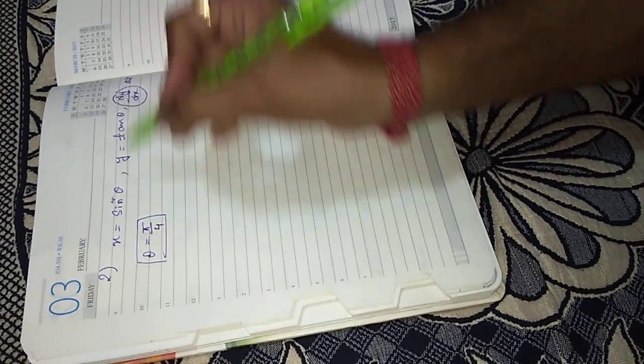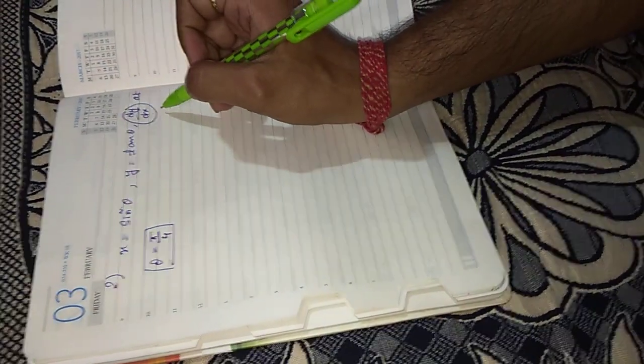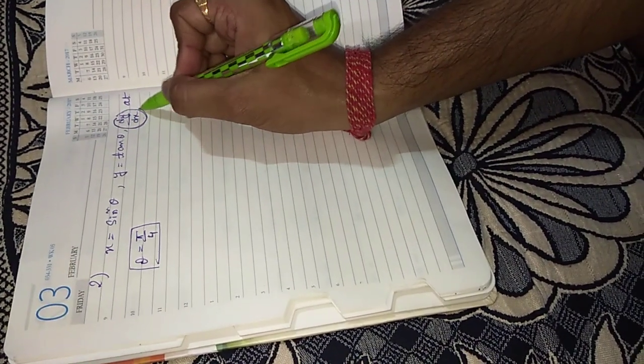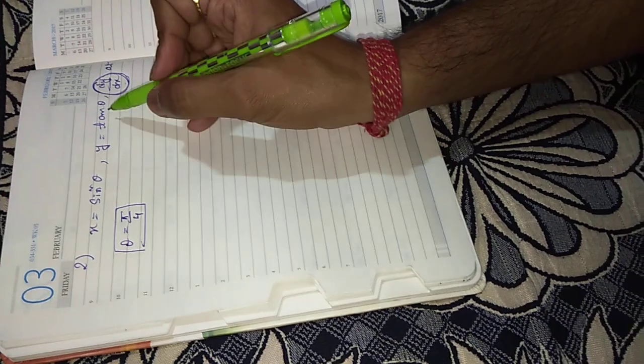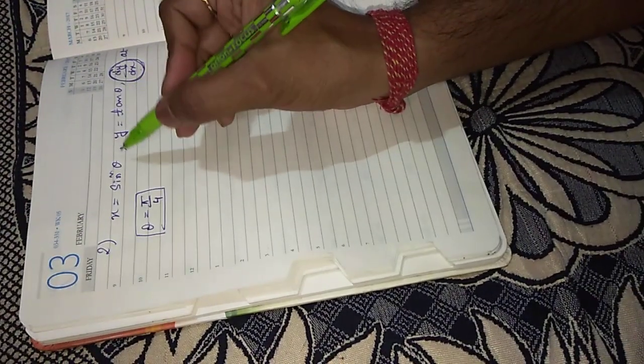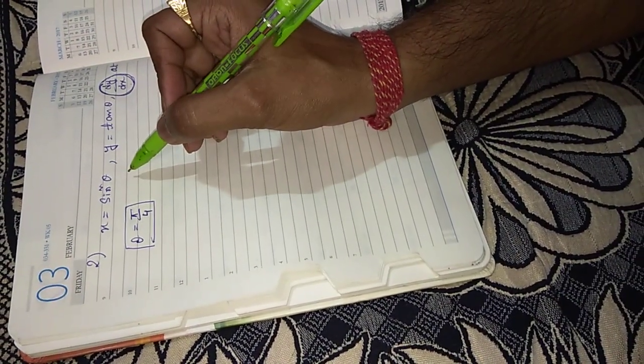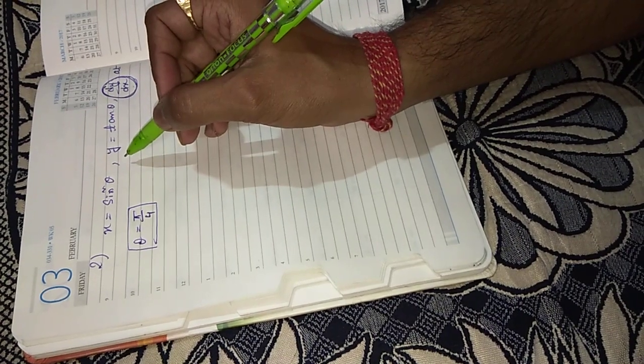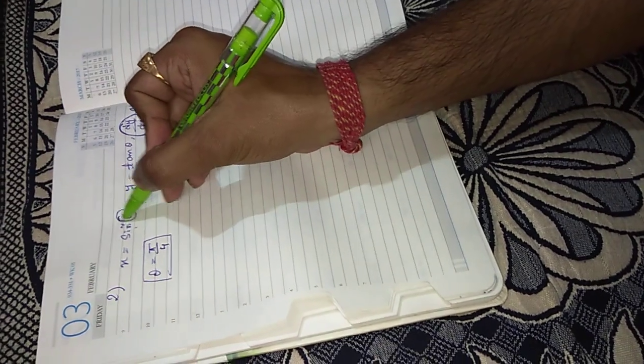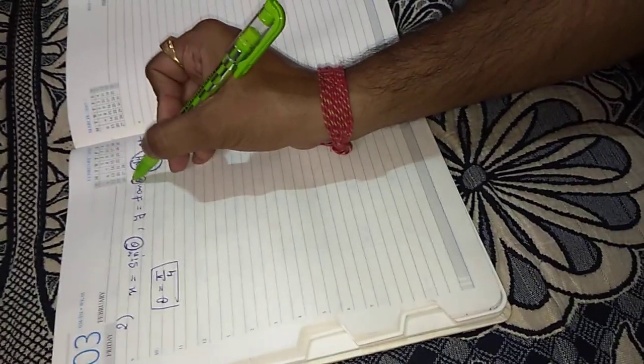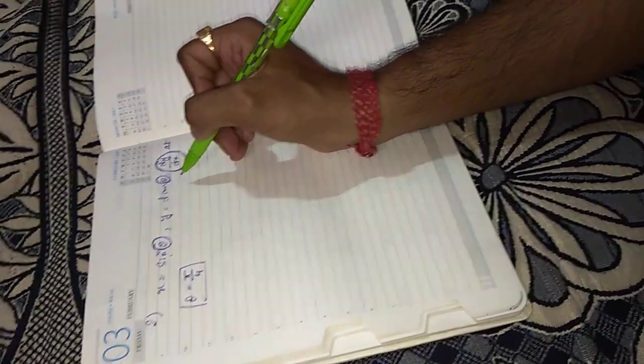Let us find first dy by dx. Before going to start differentiation, first of all you have to identify the parameter. These two are parametric functions because these two functions are connected by the parameter theta. The common parameter here is theta.